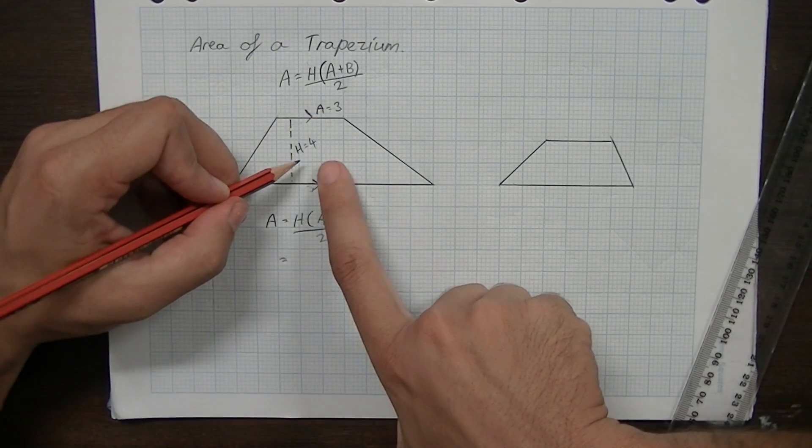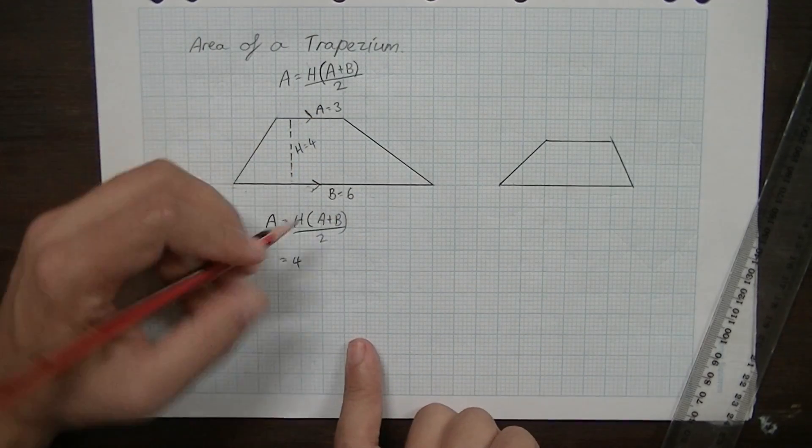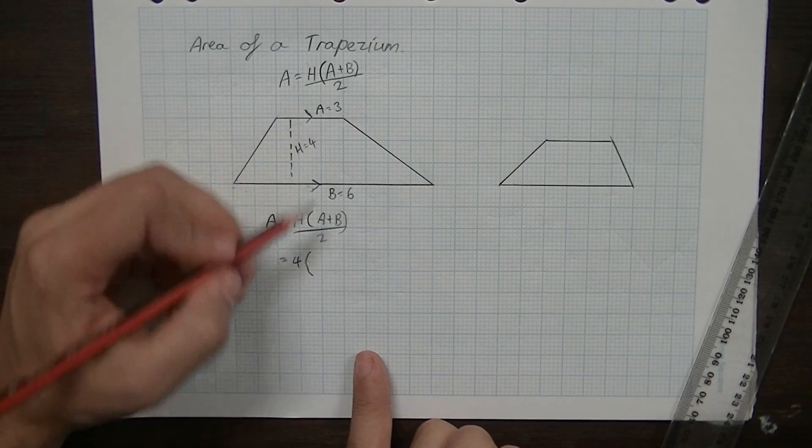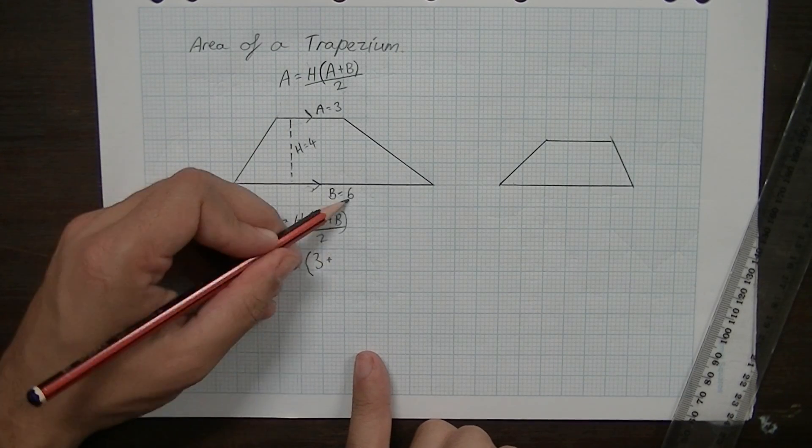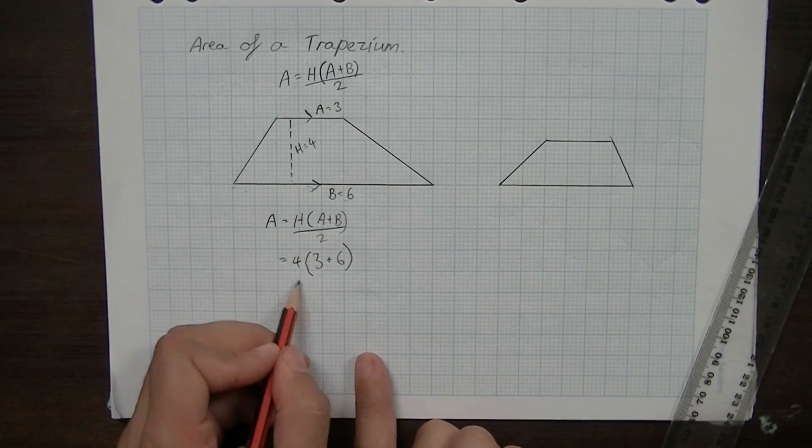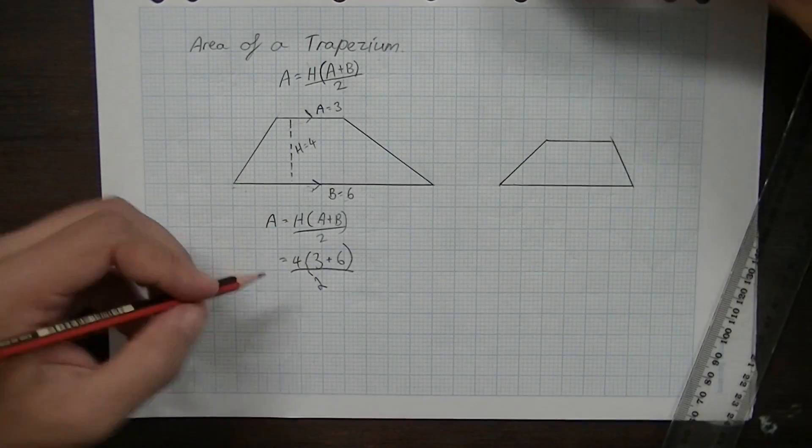Let's put it all into the formula. H is equal to 4, so the 4 goes there. A is equal to 3, B is equal to 6 and all of that's going to be divided by 2.